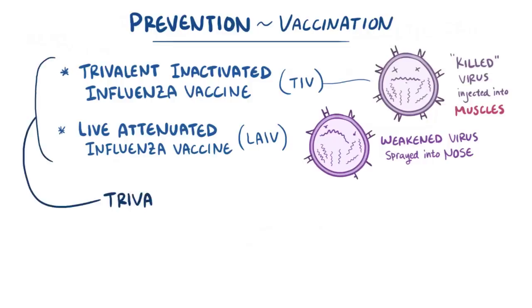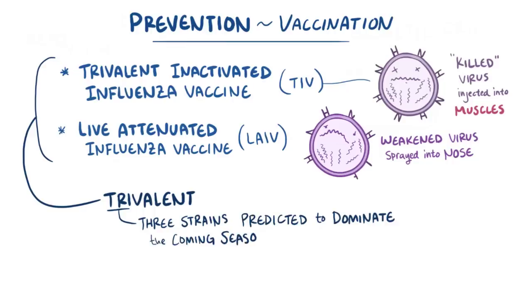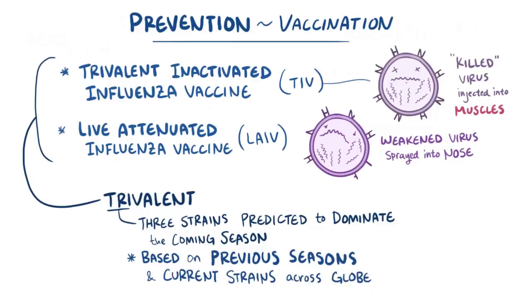Both of these are actually trivalent, meaning they have a mixture of the three strains that are predicted to be the ones that will dominate the coming season. This prediction is based on what strains typically dominate year after year, like H1N1, H3N2, and influenza B, as well as real-time data on which strains are circulating during the winter season on the other side of the planet, since these ones are likely to spread and cause trouble. This is because countries in the Northern Hemisphere, like the US and Canada, experience winter and therefore the flu season at the opposite time than other countries, like Australia, in the Southern Hemisphere.